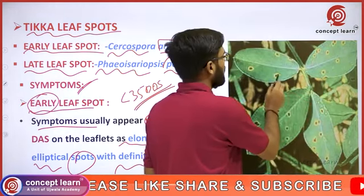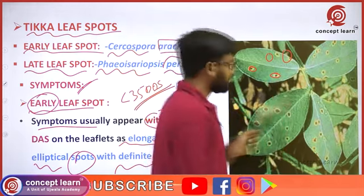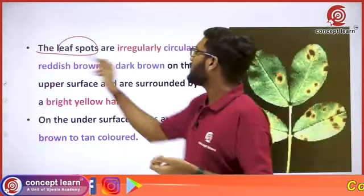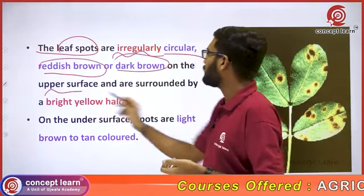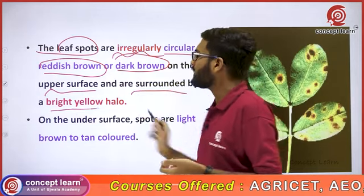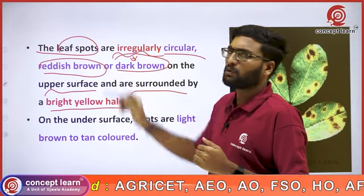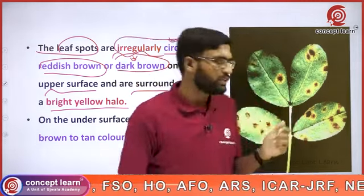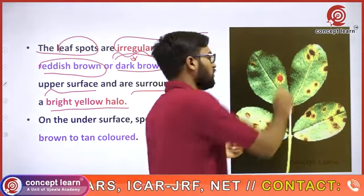The spots on the leaf surface are irregularly circular, reddish brown or dark brown on the upper surface, and are surrounded by a bright yellow halo. So on the upper surface, symptoms appear as dark brown or reddish brown spots surrounded by a yellow halo.